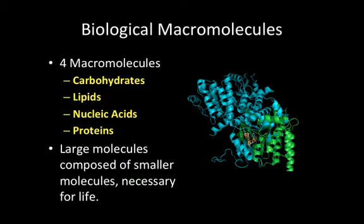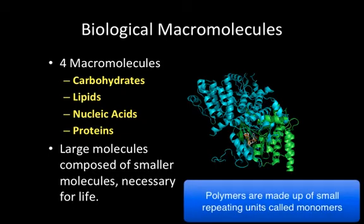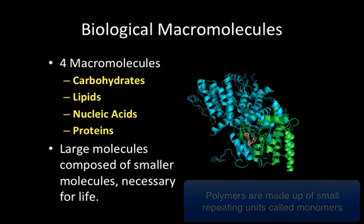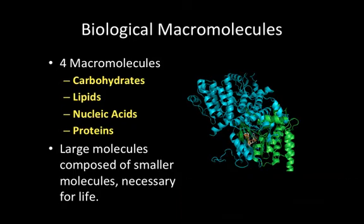Just to remind you, the four biological macromolecules include carbohydrates, lipids, nucleic acids, and proteins. These are large molecules — hopefully you remember the term polymer — that are made up of smaller repeating units called monomers. All four of these are necessary for life; they're essential for an organism to survive.